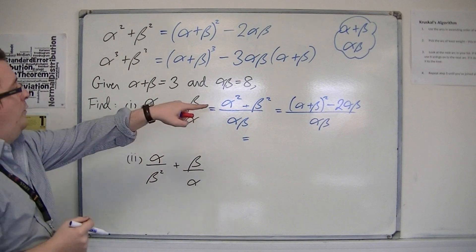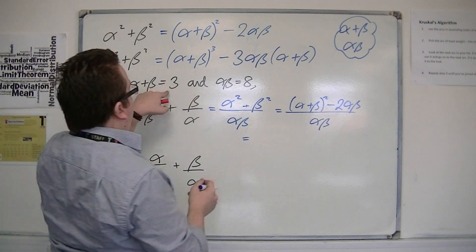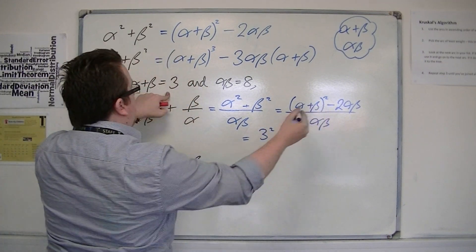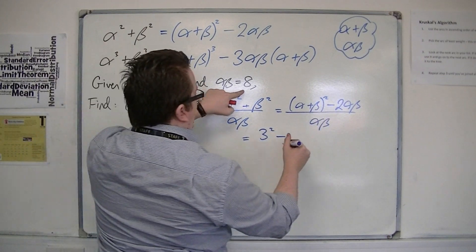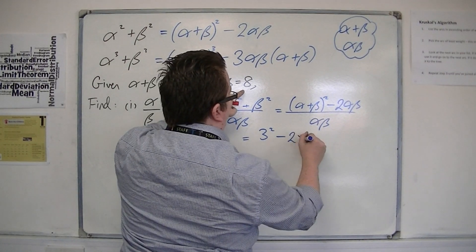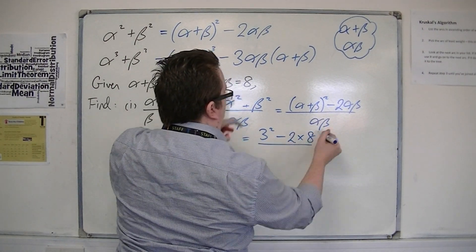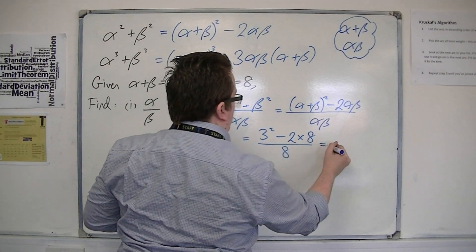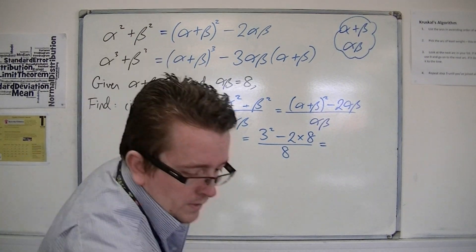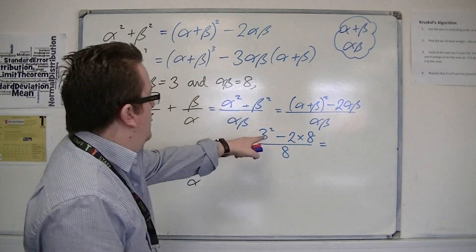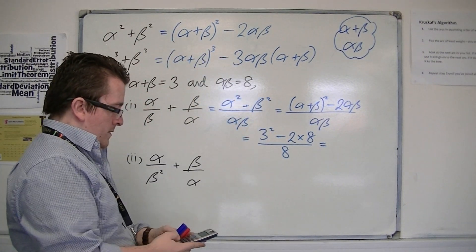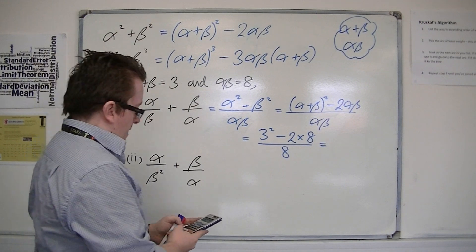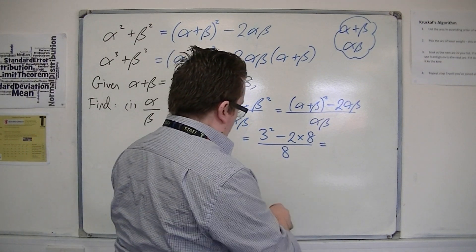So alpha plus beta is 3, so that's 3 squared, take away 2 lots of alpha beta, all over alpha beta. So I've got 9 take away 16, divide that by 8, and I get minus 7 eighths.